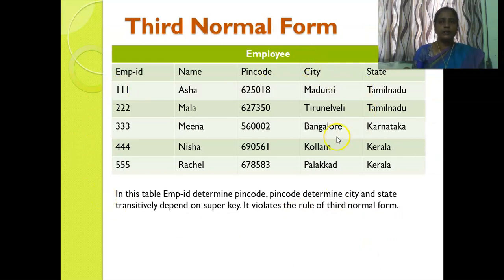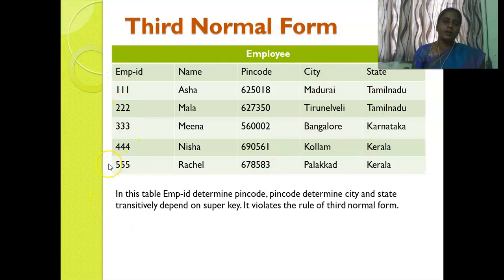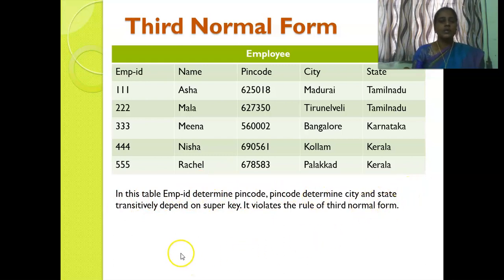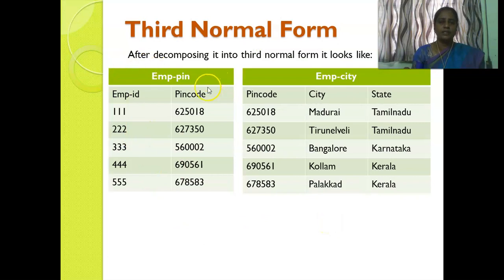This table is not in third normal form, so we are going to decompose it. The employee table has employee ID, name, pin code, city, and state. Employee ID is a primary key and it determines pin code. Pin code is also a key, and it determines city and state. So there is a transitive dependency from employee ID through pin code to city and state, which violates the rule of third normal form. We have to decompose this table.